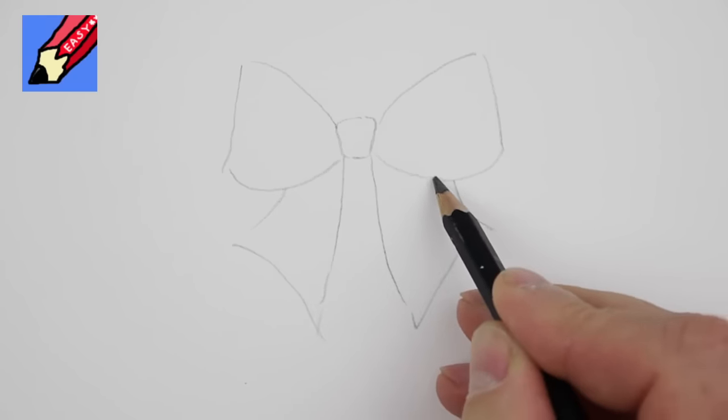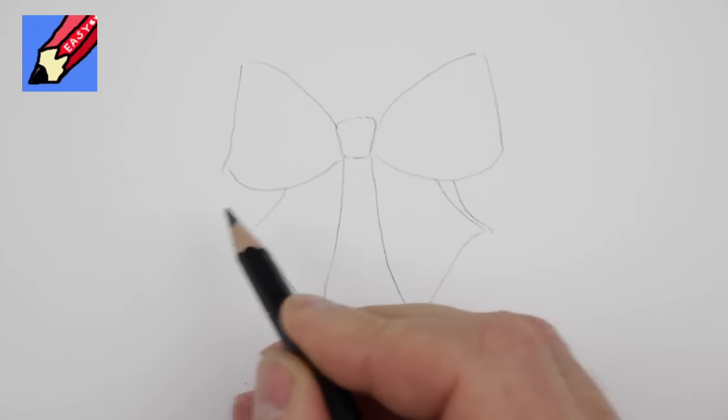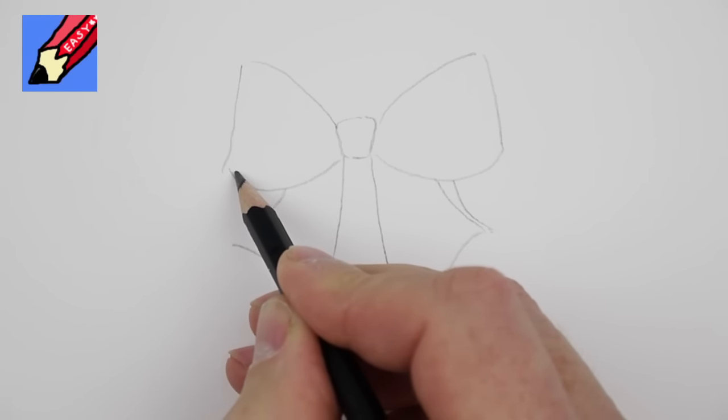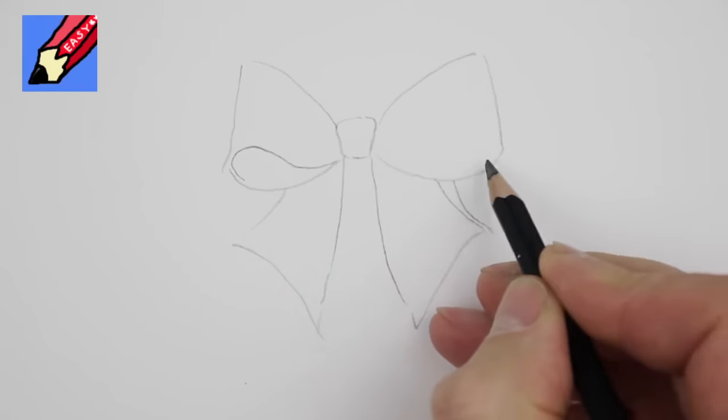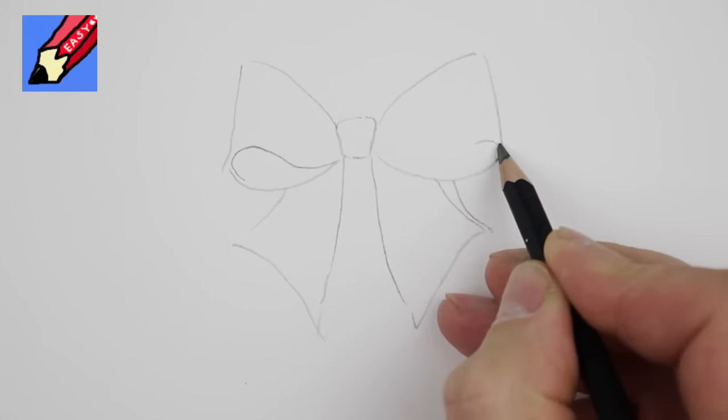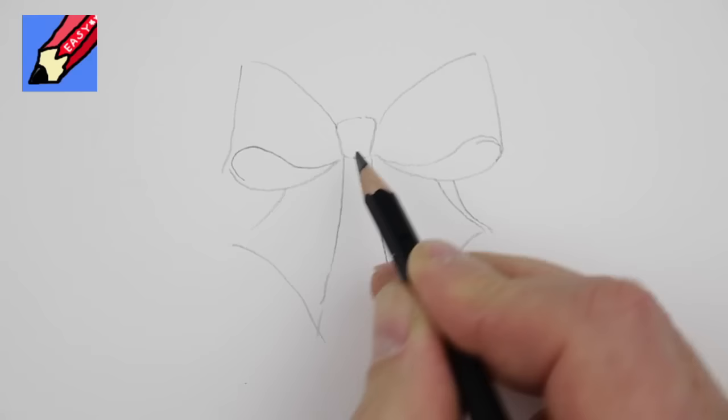Like that. Maybe that could be slightly less. Now what you need to do here is draw a curve that comes around like that, and here a curve that comes around like that.